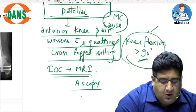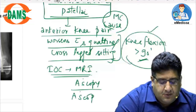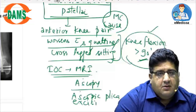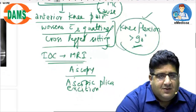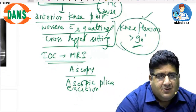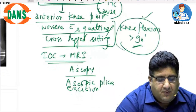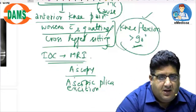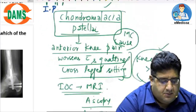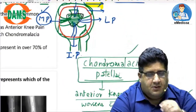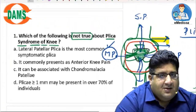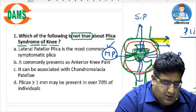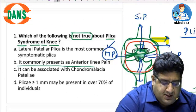How do you diagnose it? The investigation of choice is MRI. The gold standard investigation is arthroscopy. How do you treat it? Arthroscopic plica excision — you have to cut the plica; otherwise things will worsen. Whatever damage to the cartilage has already occurred cannot be reversed, but you can stop the progression.